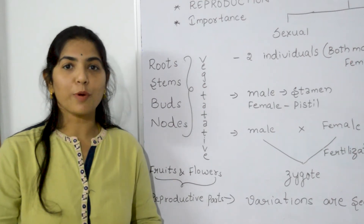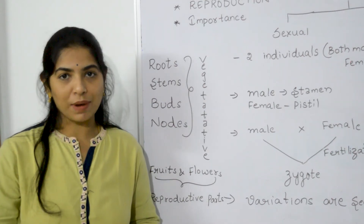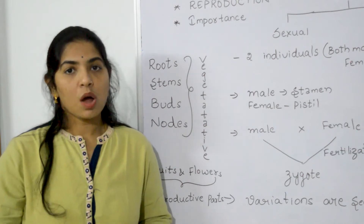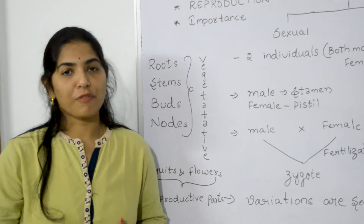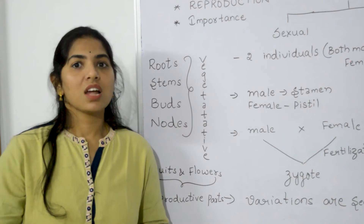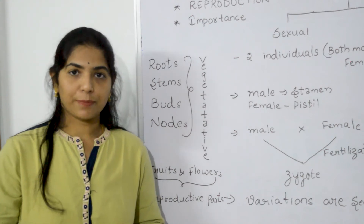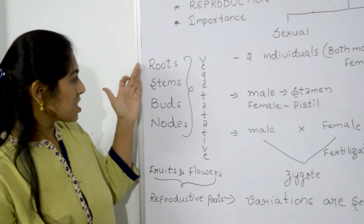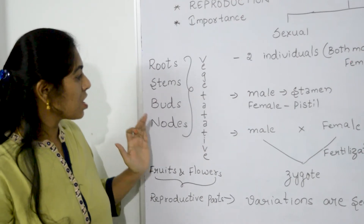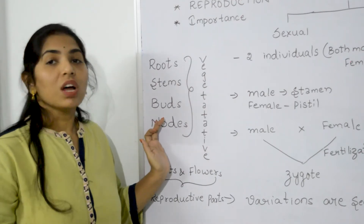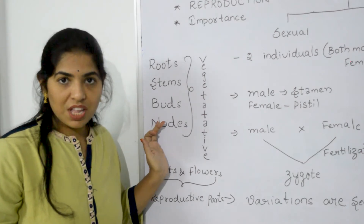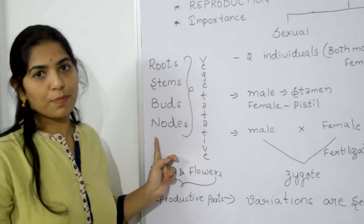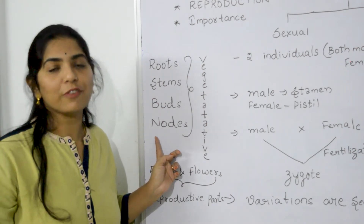Now let us learn about vegetative propagation in plants. In a plant there are two parts: one is the vegetative parts and the other is the reproductive parts. Vegetative parts include roots, stems, buds, and nodes. If the plant reproduces by these vegetative parts, we call such reproduction vegetative propagation.